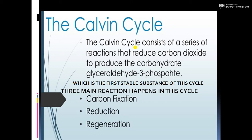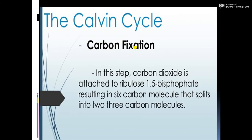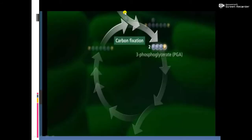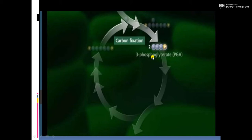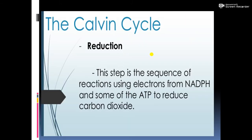Three main reactions happen in the Calvin cycle: carbon fixation, carbon reduction, and regeneration. In the carbon fixation step, carbon dioxide is attached to ribulose-1,5-bisphosphate, resulting in a six-carbon molecule that splits into two three-carbon molecules. In the diagram, you can see ribulose-1,5-bisphosphate combining with carbon dioxide to first form an unstable six-carbon ketoacid intermediate, which then breaks down into two molecules of three-phosphoglycerate — the first stable substance of the cycle.